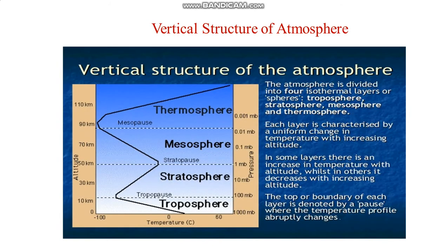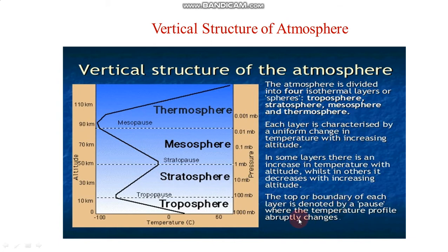The vertical structure of the atmosphere is shown in this figure. The lowermost layer is the troposphere, up to 11 km, then the stratosphere from 11 km to 50 km, then the mesosphere, and then the thermosphere. In the thermosphere, temperature increases with increasing height. There is a sharp boundary between each two layers — the tropopause, stratopause, and mesopause — where the temperature profile apparently changes.